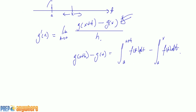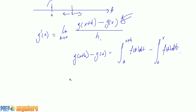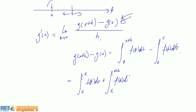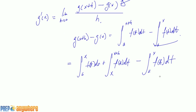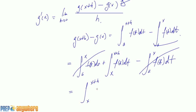Now using the property of integrals, I can change that into the integral from a to x of f(t) dt, plus the integral from x to x+h of f(t) dt, and leave the back part alone. When I do that, the a-to-x parts cancel, and we're really left with just the integral from x to x+h of f(t) dt.